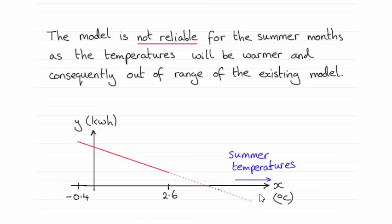So clearly it's outside this range here, from minus 0.4 to 2.6. So it's going to be unreliable.